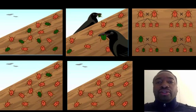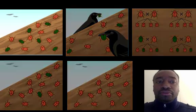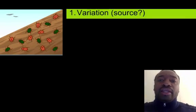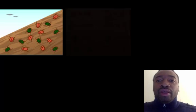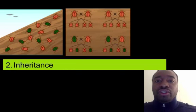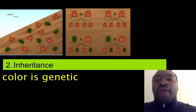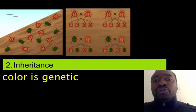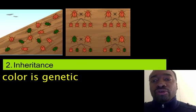So you probably have seen that the population that's changing, of course, are these beetles. The variation we're looking at is color — some are green, some are red. We're assuming that color is a genetic trait that is being passed down and inherited. So the red beetles are producing red offspring, and green beetles are producing green offspring.